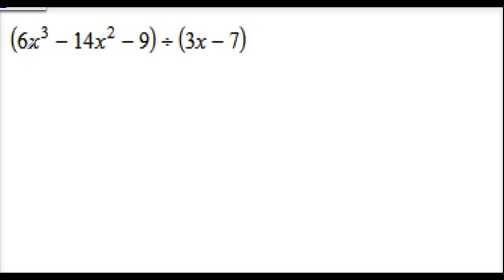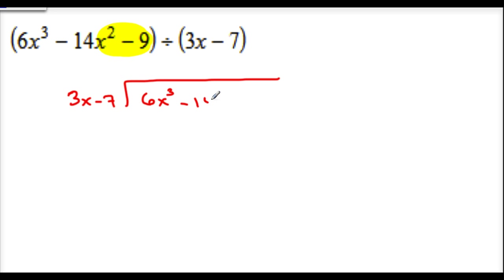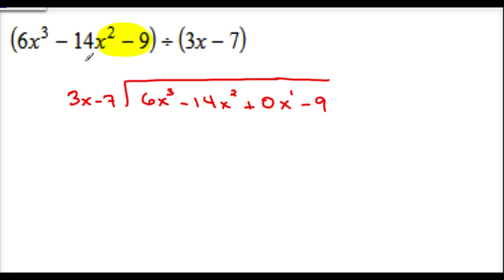So I've got 3x minus 7 going into 6x cubed minus 14x squared minus 9. If you notice here, there's a term missing — there should be an x to the first term. So when we do this long division, we're going to set this up as 3x minus 7 into 6x cubed minus 14x squared plus 0x to the first minus 9. I'm going to fill that spot in with 0x to the first. It's possible you can fill in two or three spots, depending on how many terms you have. So if this was 6x to the fourth, I would have to fill in 0x cubed and 0x to the first.